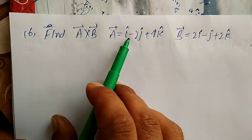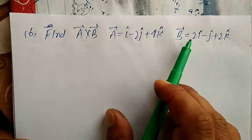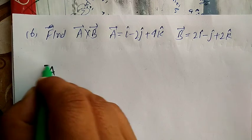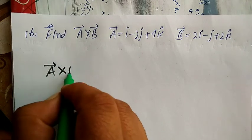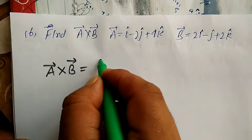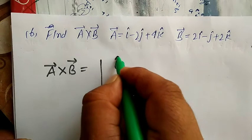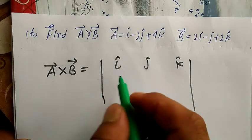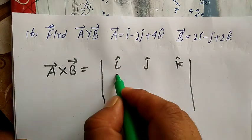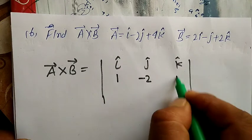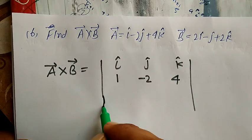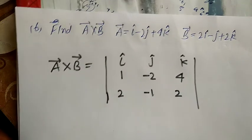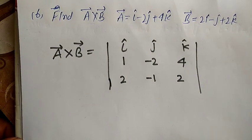Next: find a cross product. We have a = i − 2j + 4k and b = 2i − j + 2k. We compute a × b directly using determinant form: |i  j  k / 1  −2  4 / 2  −1  2|.